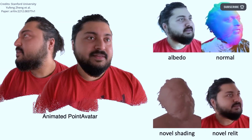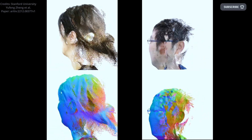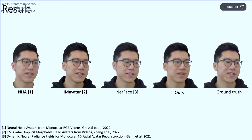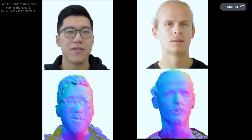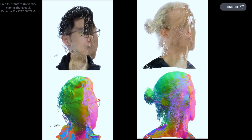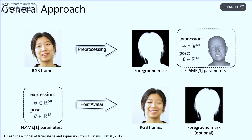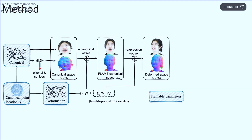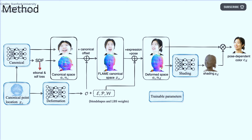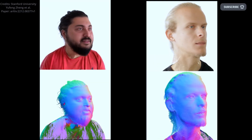Another recent breakthrough from Stanford called Point Avatar is an AI that can create 3D head avatars from videos. The ability to create realistic, animated, and relightable head avatars from casual video sequences would have many applications in communication and entertainment. Current methods either use explicit 3D morphable meshes known as 3DMM or neural implicit representations. The former are limited by fixed topology, while the latter are difficult to deform and inefficient to render. Additionally, existing approaches combine lighting and color estimation, limiting their ability to re-render the avatar in different environments.